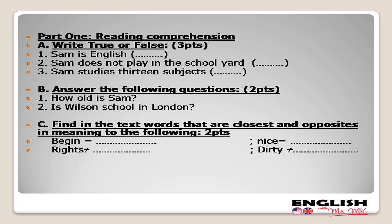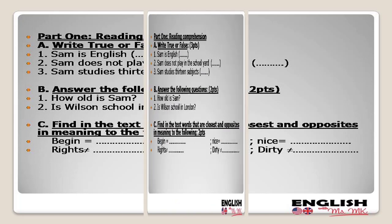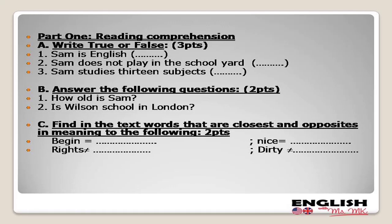We move to activity C, which is a lexis activity. Pupils are going to look for words in the text. You should explain to your pupils — since they are very young — to find words directly from the text, not choose or put words from their own minds, because most pupils get confused as far as this activity is concerned.